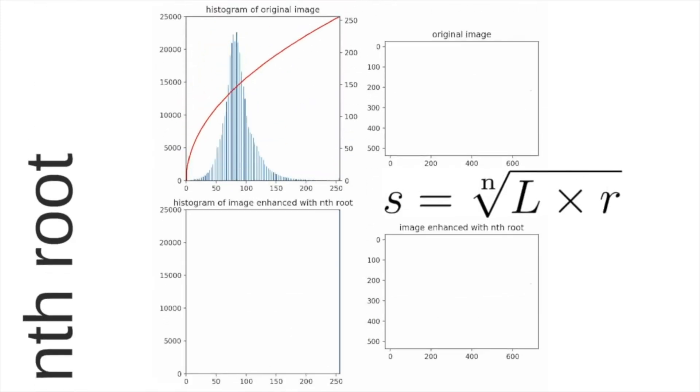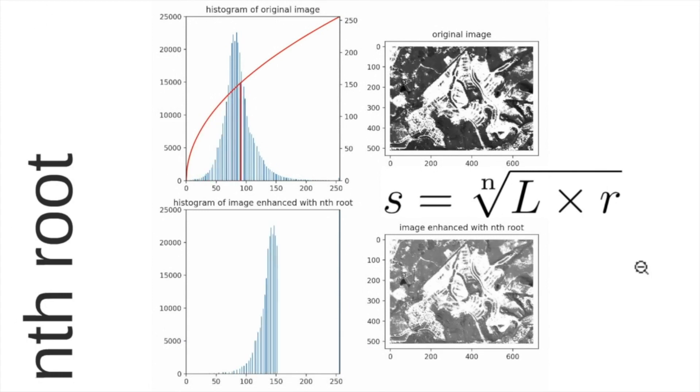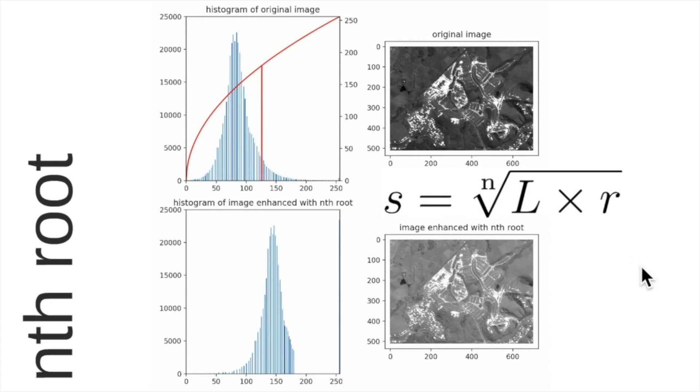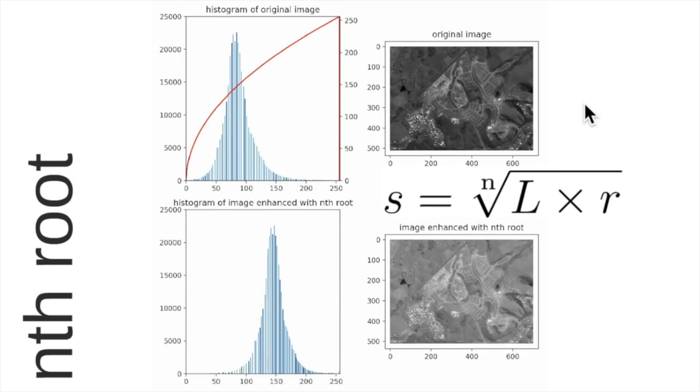The second function is the nth root, in our case n equal to 2, the square root of the input pixel value plus the maximum value. So there is not so many transformations from the input to the output comparing it to the logarithm.